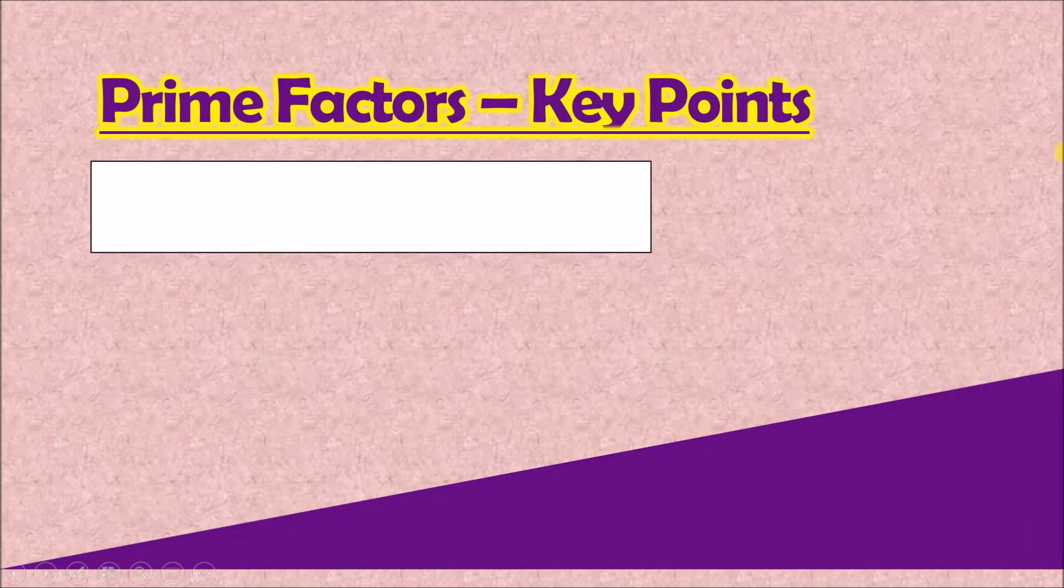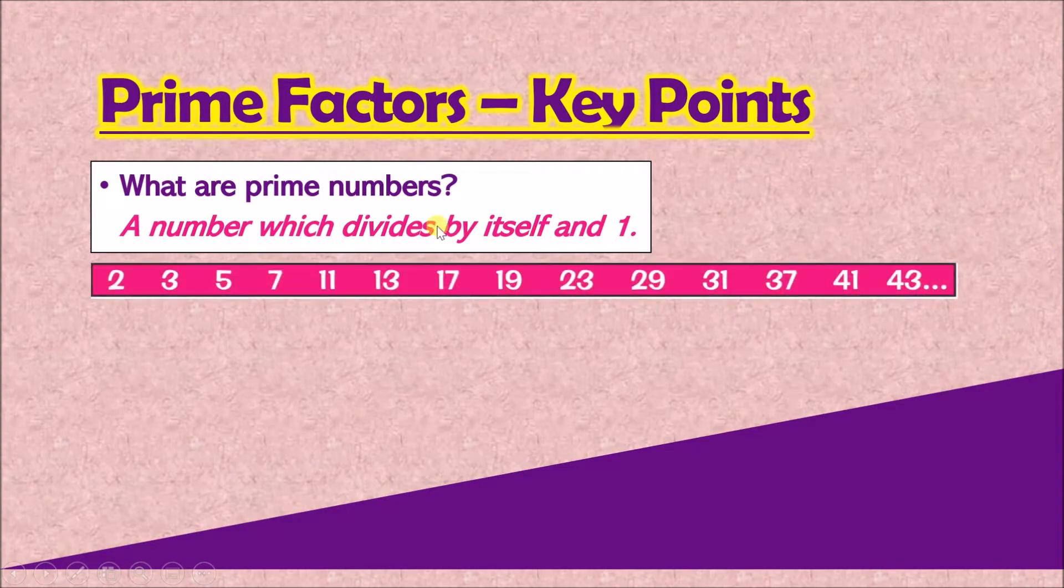So first things first, what are prime numbers? Well, a prime number are just numbers which divide by itself and one. So you can kind of think of this list here. So the numbers like 2, 3, 5, you can only get them by doing 2 times 1, 3 times 1, and 5 times 1. There's no 4 there because 4 is made by other numbers like 2 times 2. So essentially, a prime number is just numbers where you can only get all these numbers by timesing itself and 1.